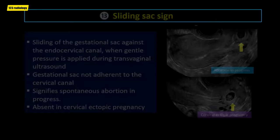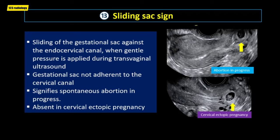The sliding sac sign describes the sliding of the gestational sac against the endocervical canal when gentle pressure is applied during transvaginal ultrasound examination, confirming that the gestational sac is not adherent to the cervical canal and signifying spontaneous abortion in progress. This sign should be absent in cervical ectopic pregnancy, where the gestational sac is adherent to the cervical canal.